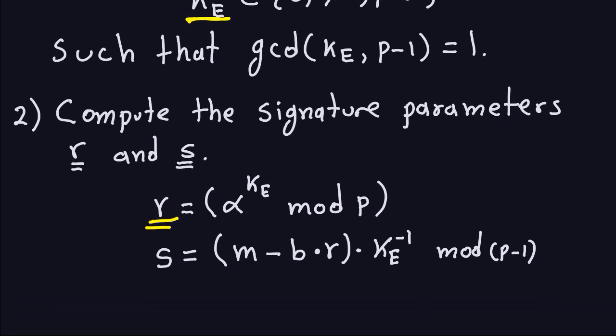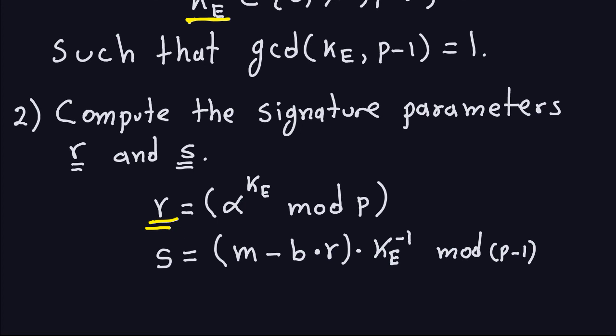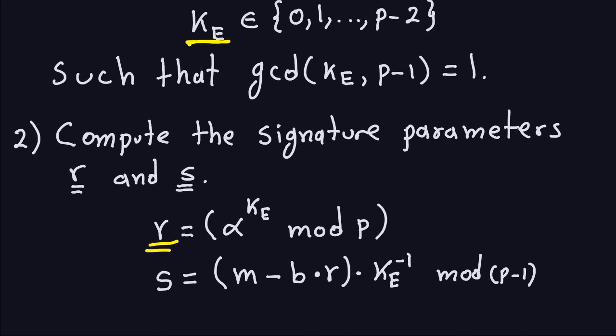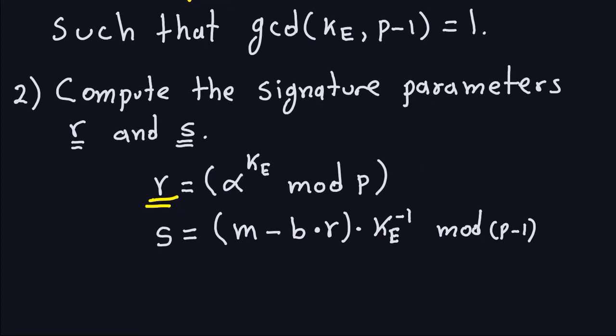S cannot be pre-computed, and the reason for that is because S depends on the message. So if you change the message, S is going to change. R and the ephemeral key do not change with the message. Now, of course, you have to be worried about using the same ephemeral key for every message, but this is one way you can save some time by pre-computing the ephemeral key and R.